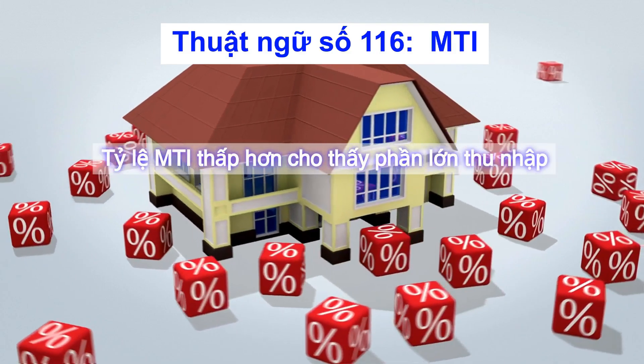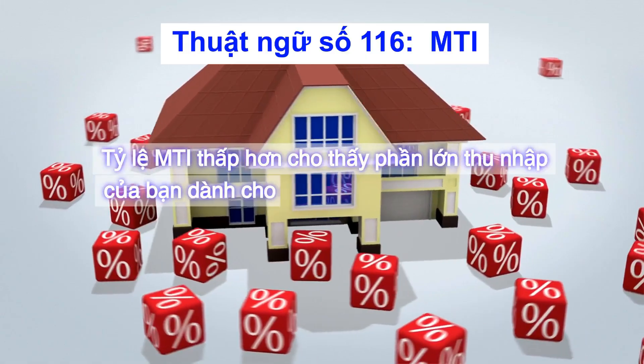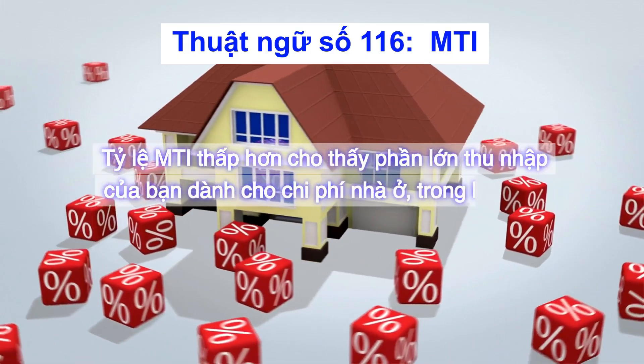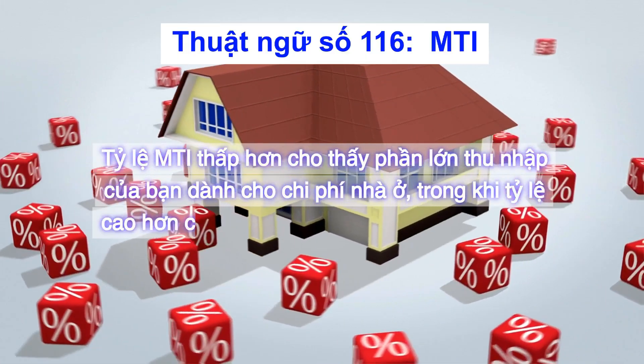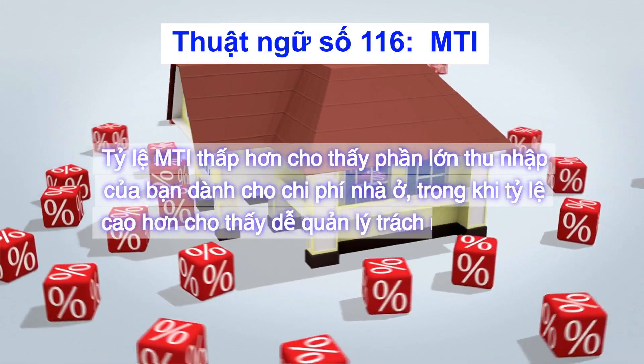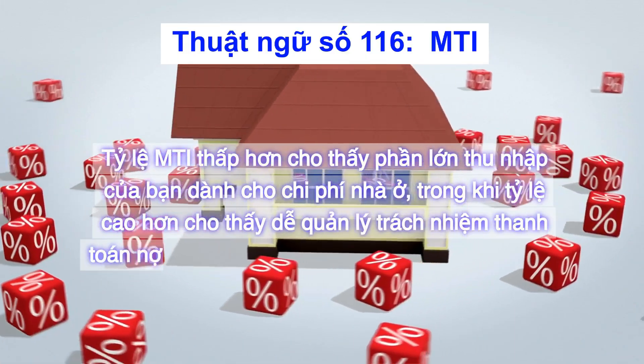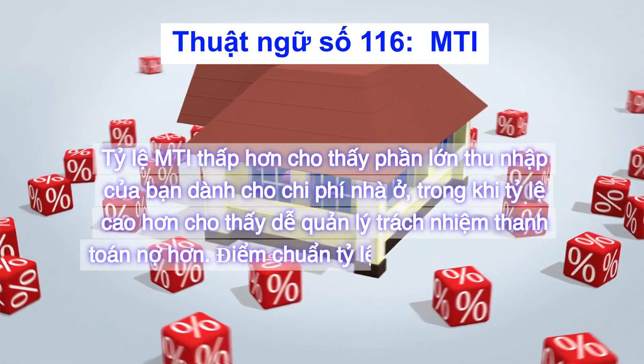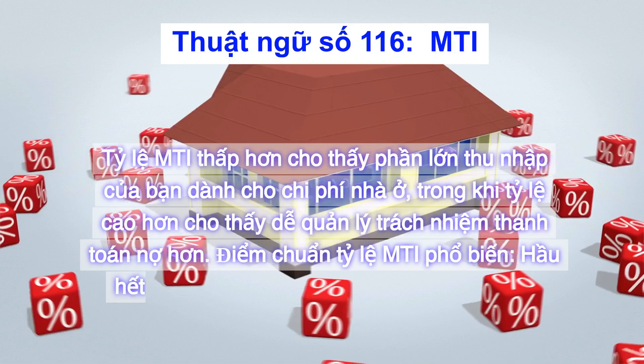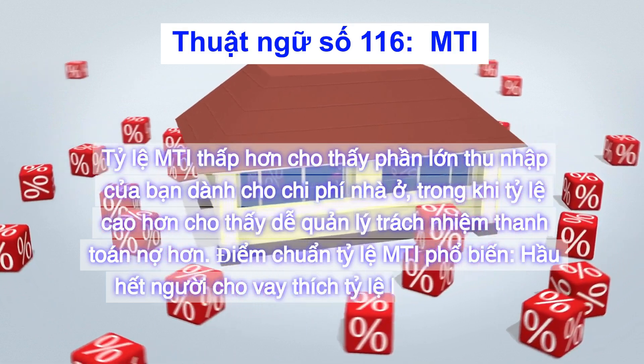Tỷ lệ MTI thấp hơn cho thấy phần lớn thu nhập của bạn dành cho chi phí nhà ở, trong khi tỷ lệ cao hơn cho thấy dễ quản lý trách nhiệm thanh toán nợ hơn.